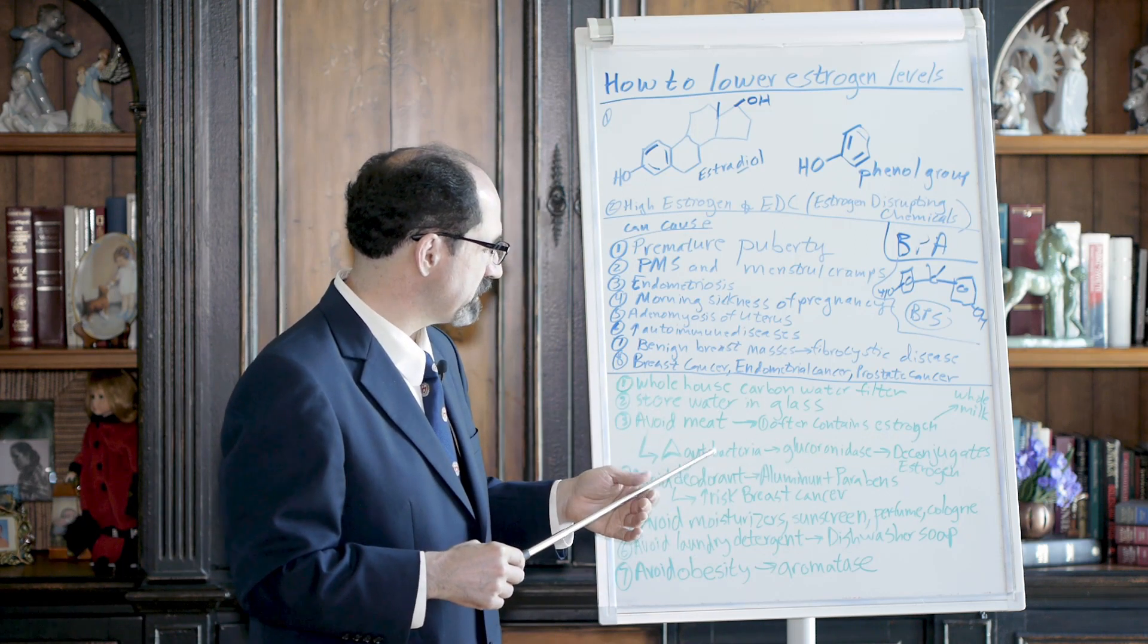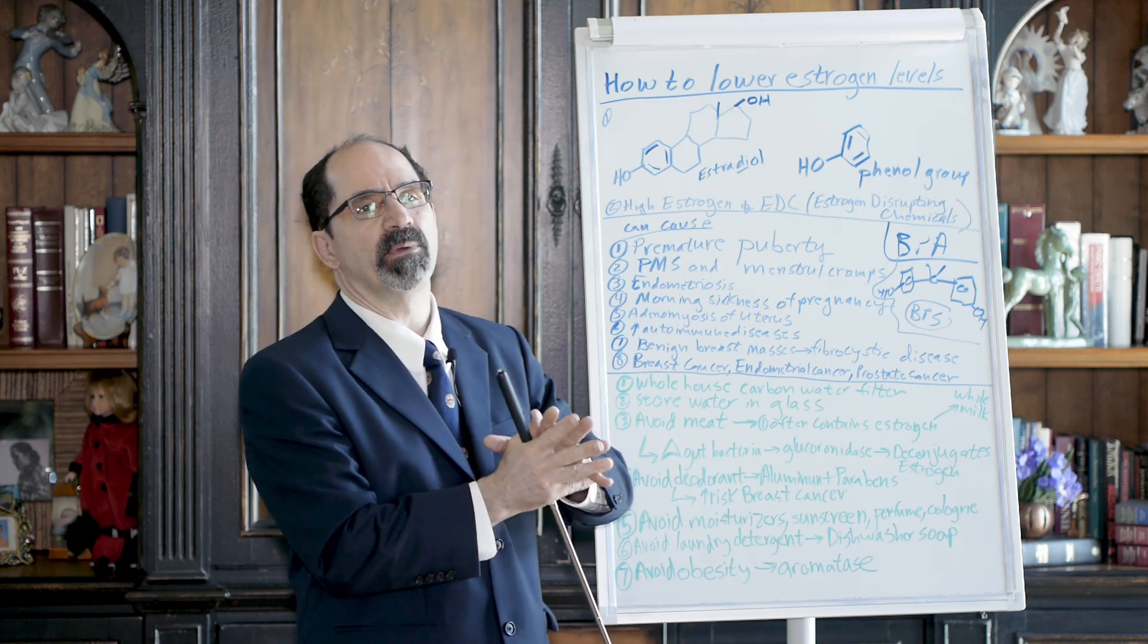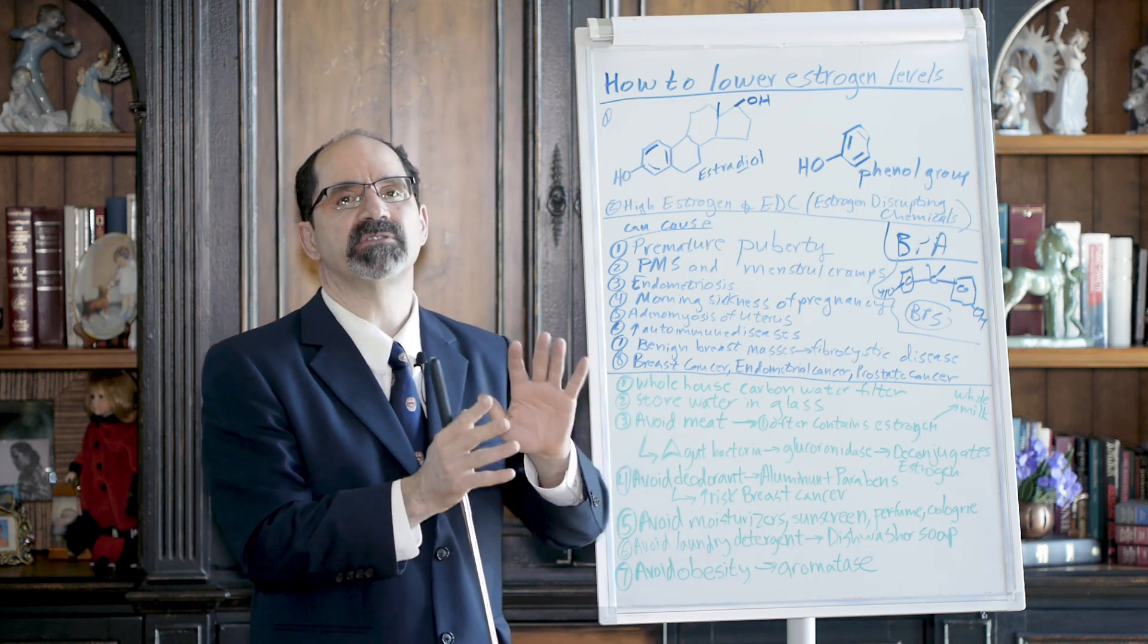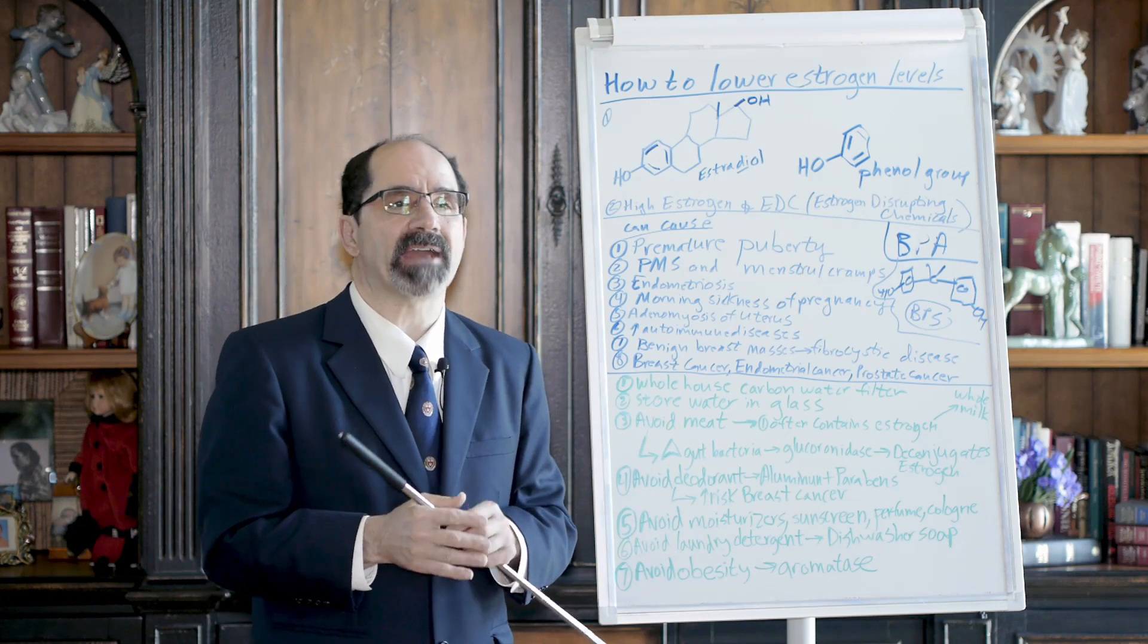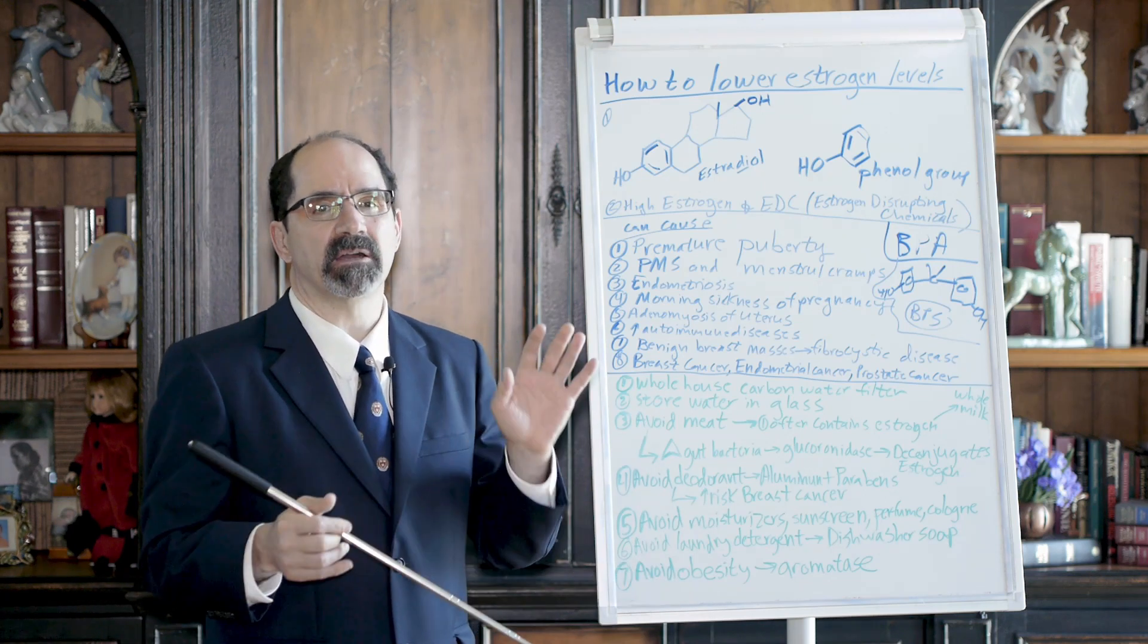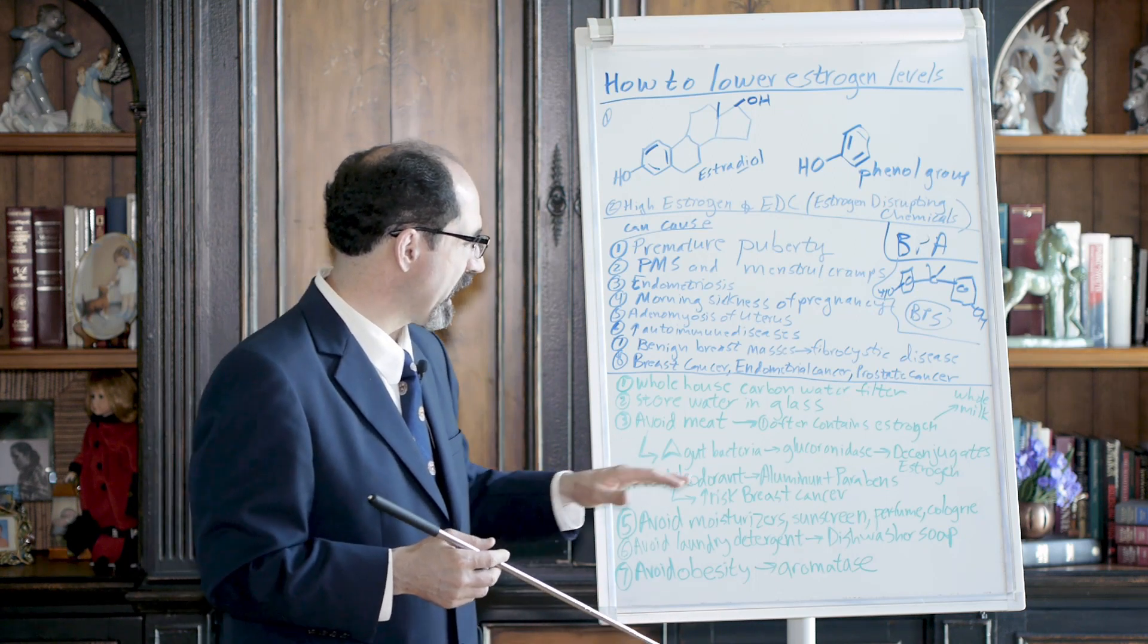But in addition, meat changes the gut bacteria. Basically, plants are carbohydrate and fiber - they tend to promote good gut bacteria. The fiber feeds the good gut bacteria. Meat is basically protein and fat, and it tends to promote bad gut bacteria that are more likely to cause leaky gut and other problems.